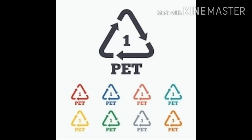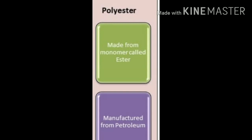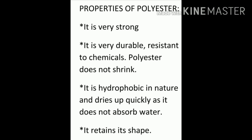What is made by polyester? It is made from a monomer called ester. So many ester units combined together make polyester. Normally, polyester is manufactured from petroleum products. What are the properties of polyester? It is very strong and very durable — that means it gives long life — and resistant to chemicals.